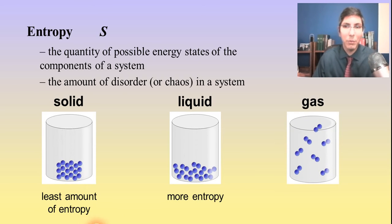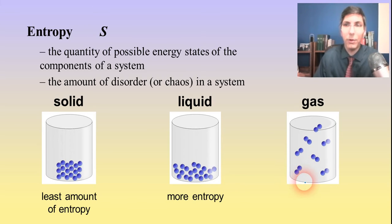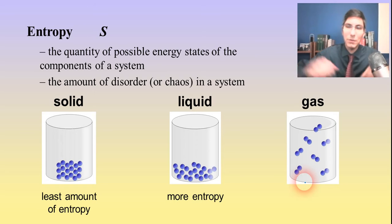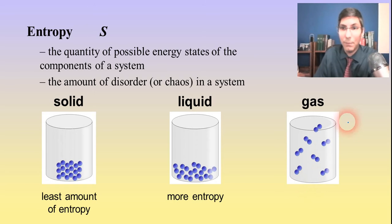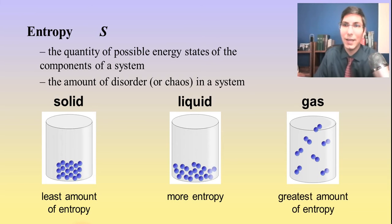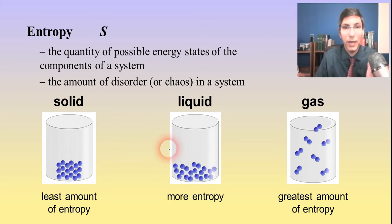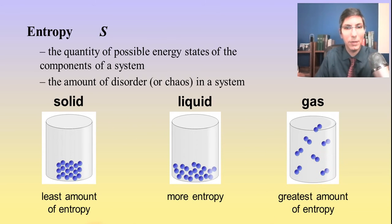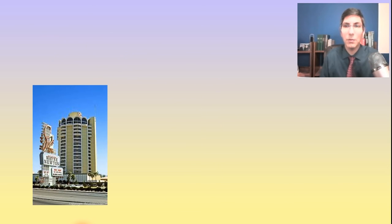In the gas state, molecules float around and move independently of each other. There's a lot of potential chaos — they're bumping into each other, bumping into container walls, possibly flying out of the container. So gas has the greatest entropy of the three states of matter. To summarize: solid has the least entropy, liquid has more, and gas has the greatest amount of chaos and entropy.